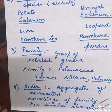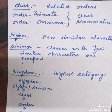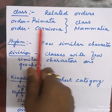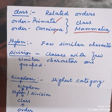Next is class. Many related orders are grouped together to form the class. For example, order Primata and order Carnivora both come under the class Mammalia. These orders are related but have slight differences; related orders come under the class Mammalia.